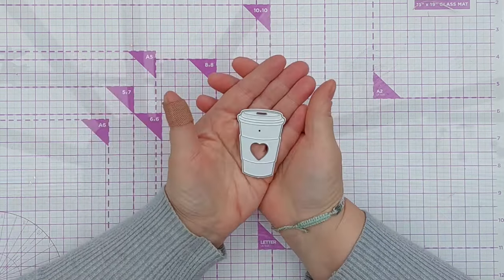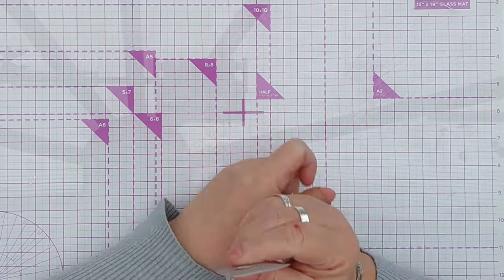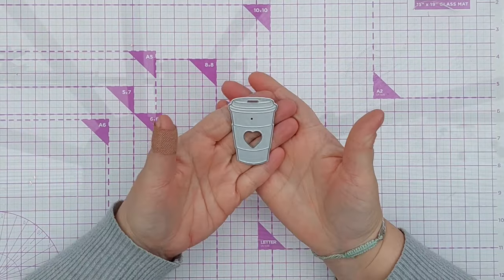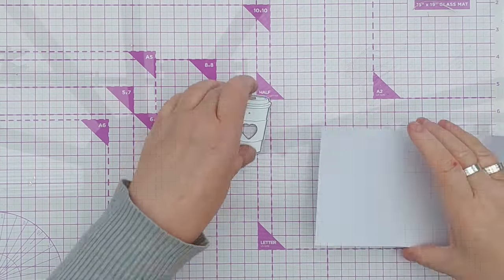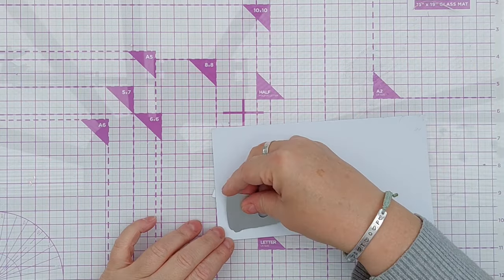So I'm going to start with this die. I believe this one is from Rose's Studio, not sure if it's still available but I'm sure there are plenty like it on the market, and I'm just going to cut lots of these in white.